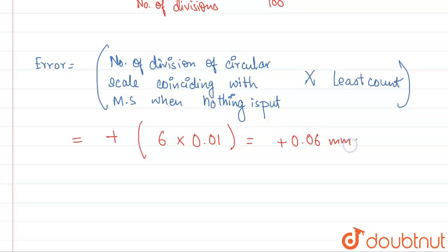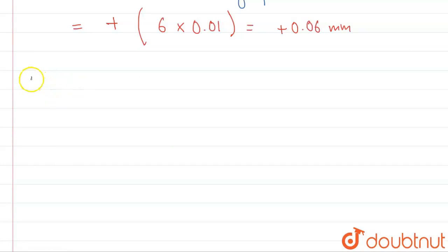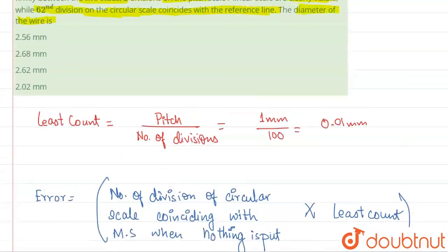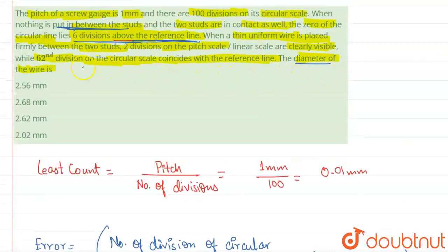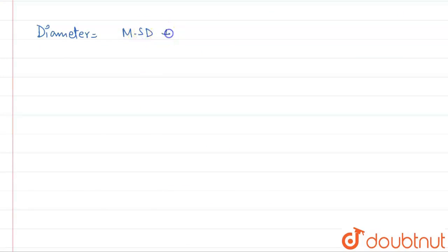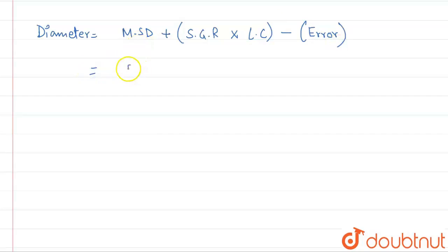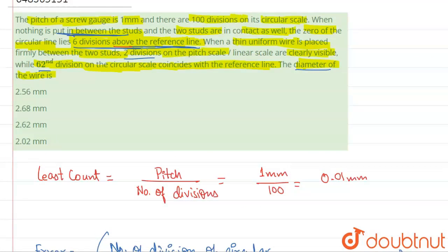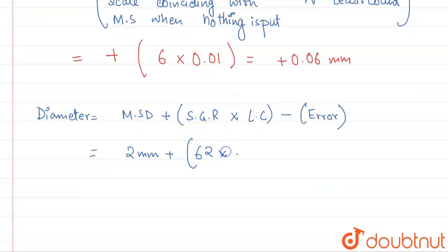Now we have to find the diameter. The diameter equals the main scale division reading plus the screw gauge reading multiplied by the least count, minus the error (with sign). The main scale reading is 2 millimeters, the screw gauge division reading is 62, and the least count is 0.01. So: diameter = 2mm + (62 × 0.01) − 0.06.